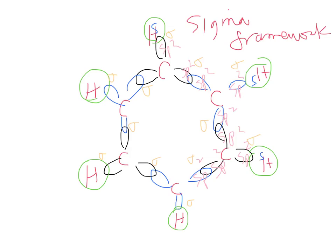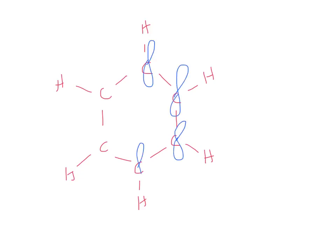Next we want to do the pi framework, and we can go back to this sigma framework as just lines. Okay, and then each carbon has an unhybridized P electron. We're going to look at the sideways overlap.